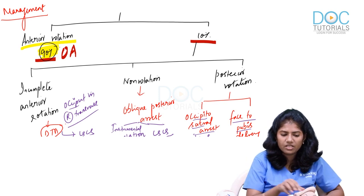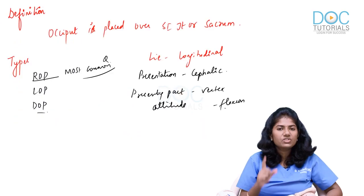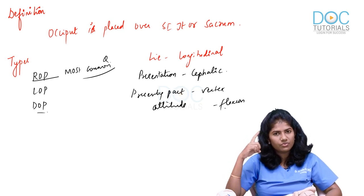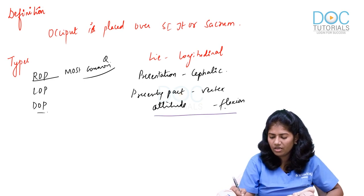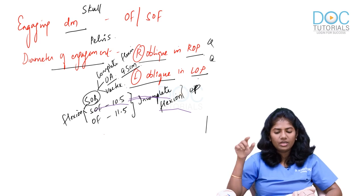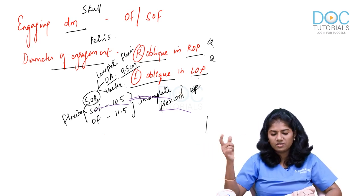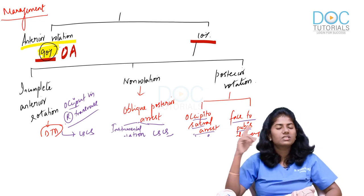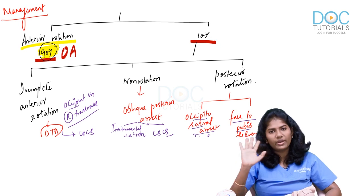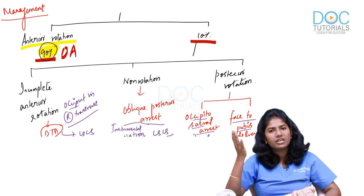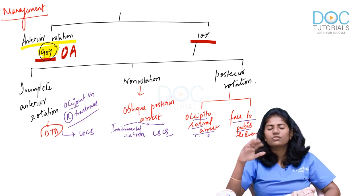Quick MCQ summary for occipito-posterior: most common posterior position is ROP (right occipito-posterior). Lie is longitudinal, presentation is cephalic, presenting part is vertex, attitude is flexion. Most common cause is abnormal pelvis — specifically anthropoid pelvis. Engaging diameter is SOF or OF measuring 10.5 and 11.5 cm respectively. Diameter of engagement is right oblique in ROP, left oblique in LOP. 90% rotate in labour — wait and watch. If not: deep transverse arrest → C-section; oblique posterior arrest → rotate with instrument or C-section; face-to-pubis → vaginal delivery.